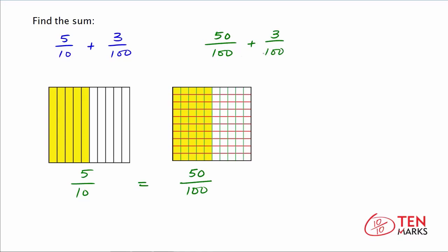Now both these fractions have the same denominator, so we can add by keeping the denominator the same, and then adding the numerators. 50 plus 3 is 53. So the sum is 53 hundredths.